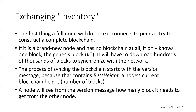The first thing a full node will do once it connects to peers is try to construct a complete blockchain — what we'll refer to as exchanging inventory. If it's a brand new node and has no blockchain at all, it only knows one block — the Genesis block, which is hard-coded into the software. Starting with block zero, the new node will have to download hundreds of thousands of blocks to synchronize with the network. The process of syncing starts with the version message because that contains best height — a node's current blockchain height, or number of blocks.